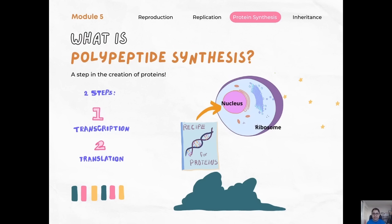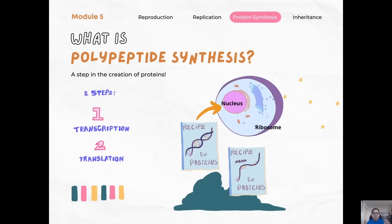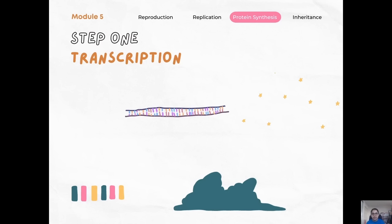Polypeptide synthesis — think of it as a recipe to create proteins, with the ribosomes as the kitchen. The first process, transcription, happens in the nucleus; the second, translation, happens in the ribosome. In transcription, we start with a double DNA strand and RNA polymerase comes along to open it up, creating a messenger RNA strand.